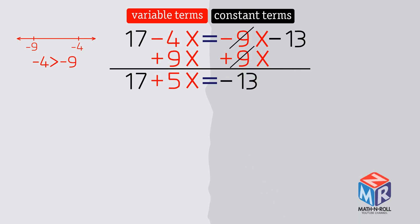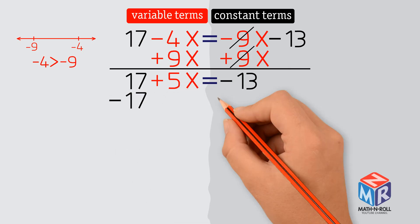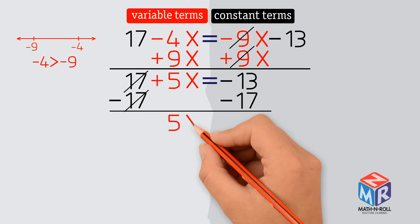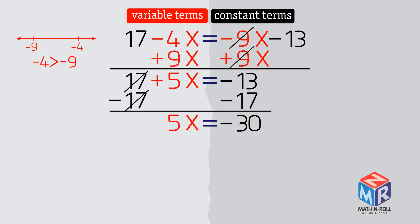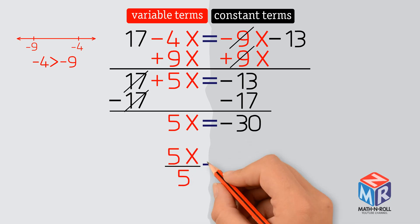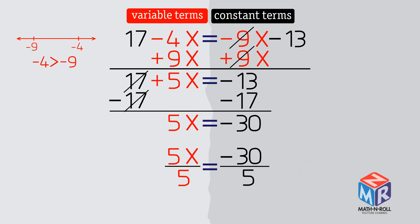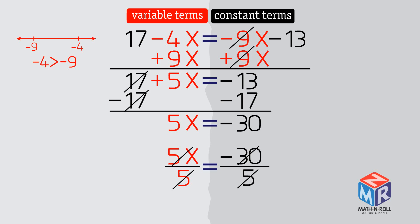We have a constant, 17, on the variable side. So we subtract 17 on both sides to get rid of it. 5x equals negative 30. The last step to get x alone, we divide both sides by 5. x equals negative 6.